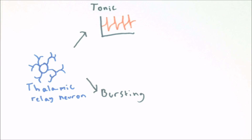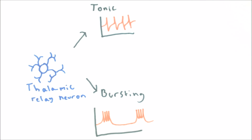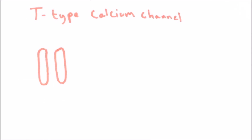Tonic firing is the normal mode of firing used by other neurons; during tonic firing an input produces a train of action potentials. In contrast, when in bursting mode, thalamic neurons undergo short bursts of high frequency spiking followed by periods of relative silence with very few spikes. Thalamic neurons are able to fire in bursting mode because they express a special type of calcium channel known as the T-type calcium channel.